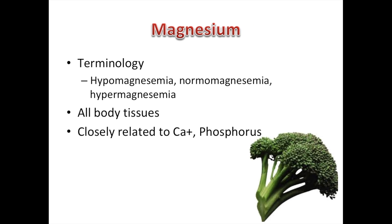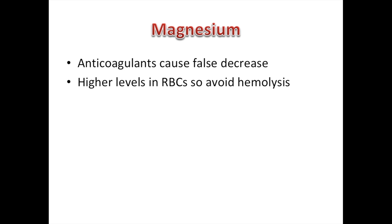Lastly, magnesium. We don't look at magnesium too often, but it's important to know it exists in all body tissues and must be balanced in the diet. The terminology is hypomagnesemia, normomagnesemia, and hypermagnesemia. It's closely related to calcium and phosphorus. Anticoagulants will cause a false decrease in magnesium. There are higher levels in RBCs than in interstitial fluid, so avoid hemolysis and separate your sample ASAP.